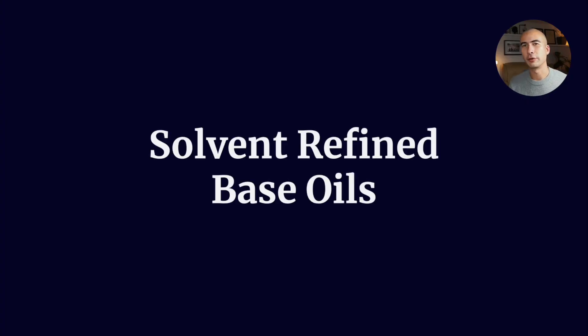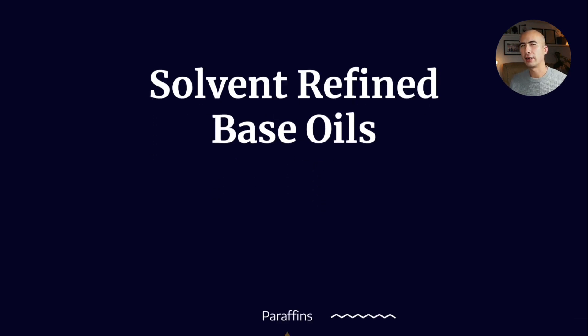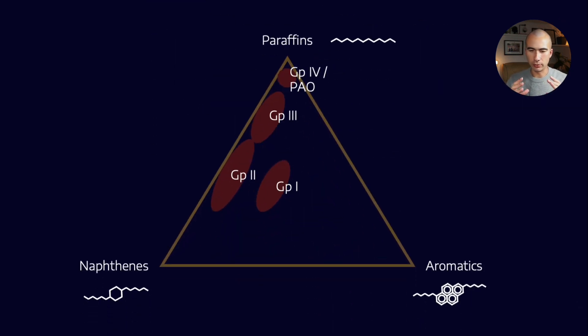Alright, so let's talk about solvent refined base oils, commonly just known as group 1. If you'll remember on our little triangle, the exercise in making group 1 base oils is an exercise in removing aromatic content and taking naphthenic content and removing it slowly so that we move from group 1 to 2 to 3.